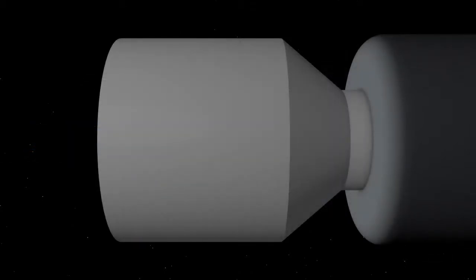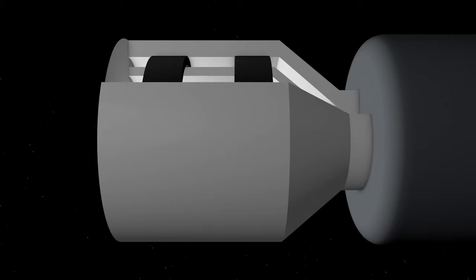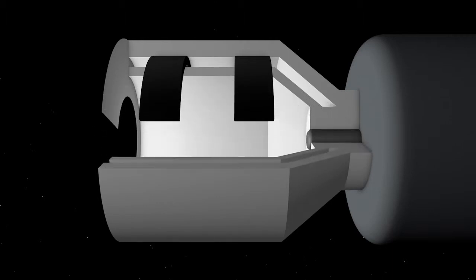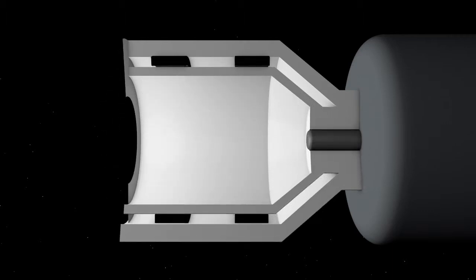Ion propulsion is the result of applying an electrical charge to molecules, a process called ionization. In an ion thruster this process occurs in the discharge chamber.